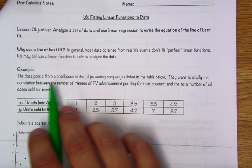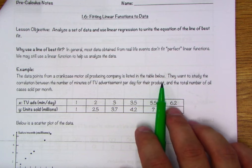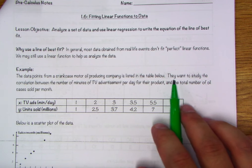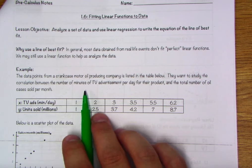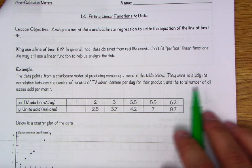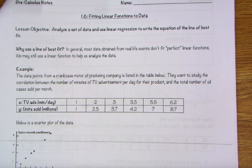It says the data points from a crankcase motor oil producing company are listed below in the table. They want to study the correlation between the number of minutes of TV ads per day for their product and the total number of oil cases sold per month.